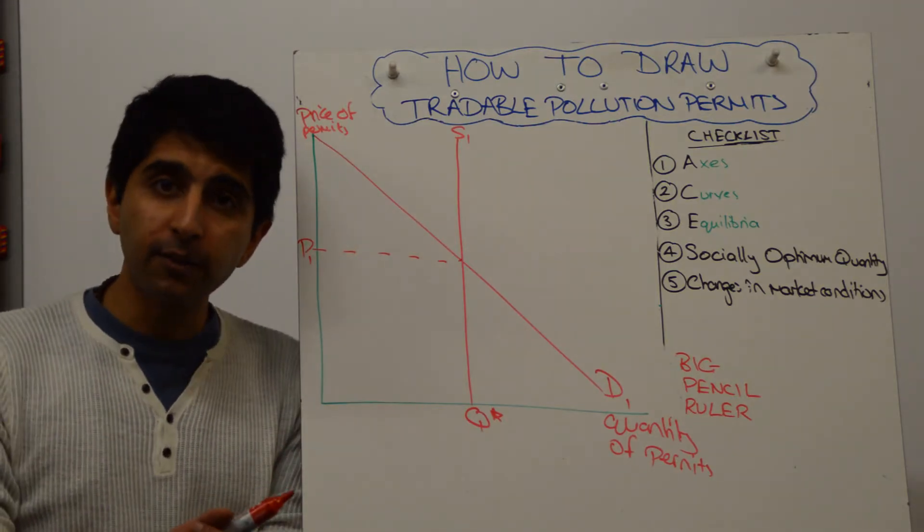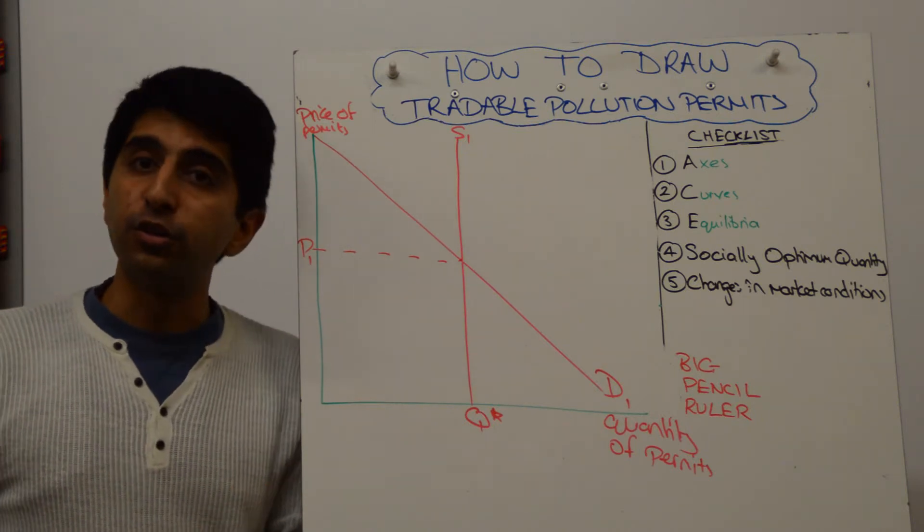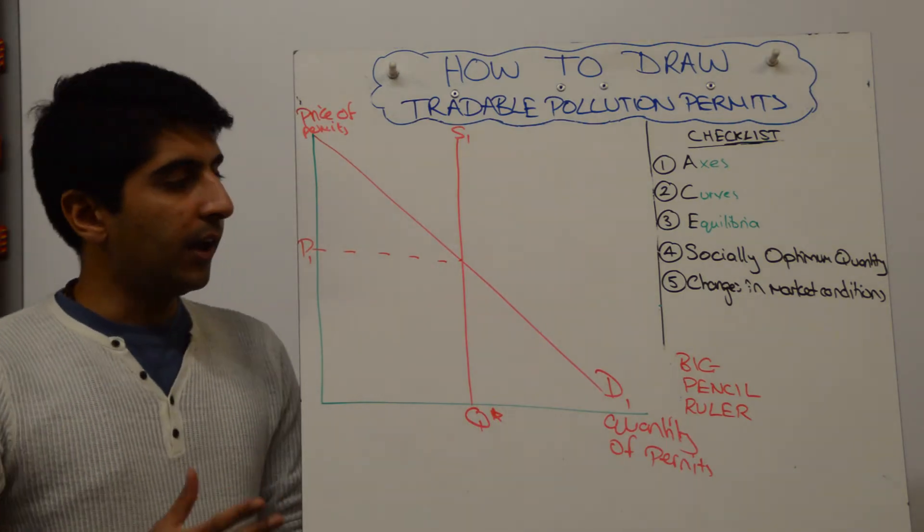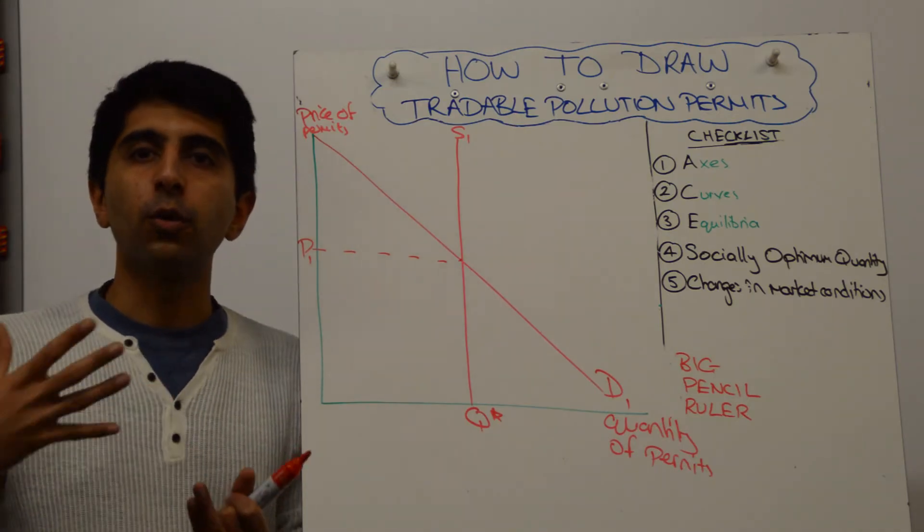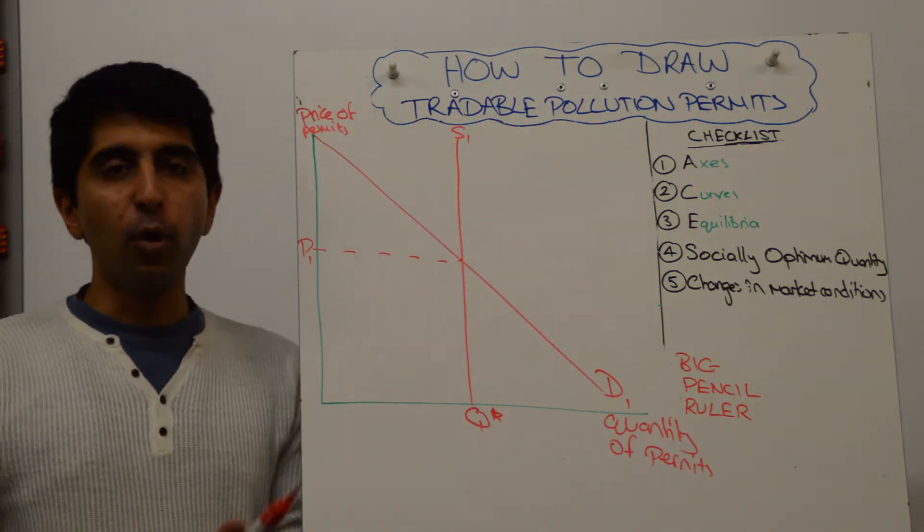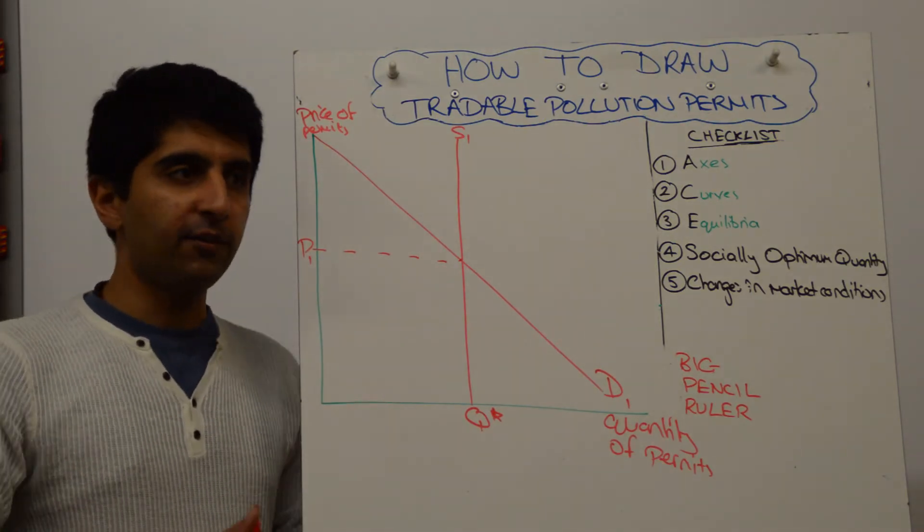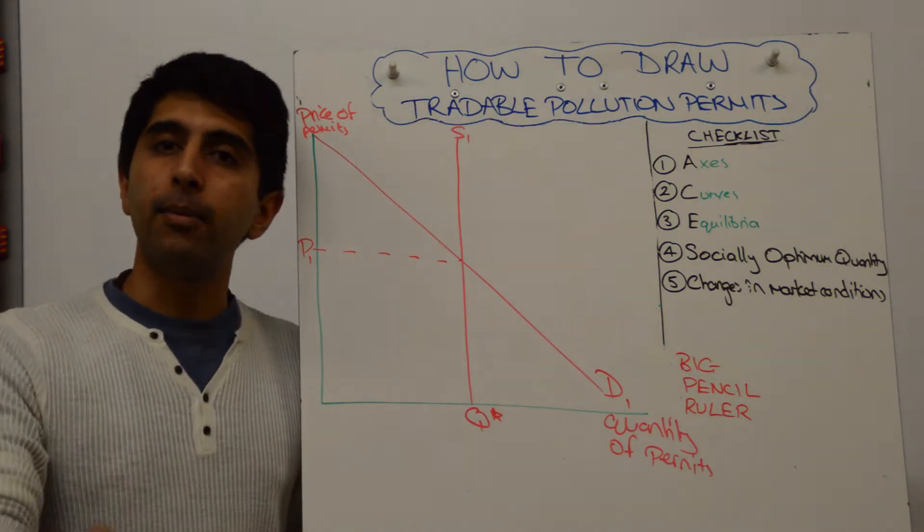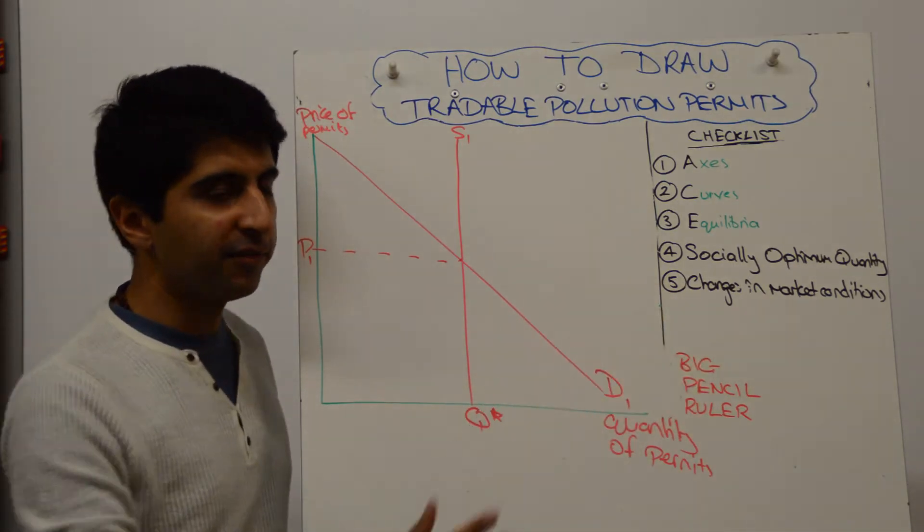They can either buy permits or they can invest in green technology and reduce pollution that way. Both options will reduce pollution overall, but a firm will only make the choice based on what's cost-effective for that given firm. So if it's more cost-effective to buy permits, then buy permits. If it's more cost-effective to invest in green technology, invest in green technology and sell any spare permits you may have. You can show that via number five here.